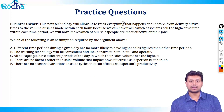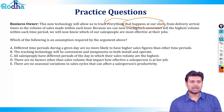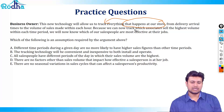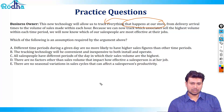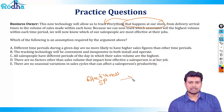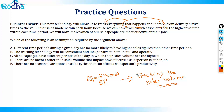Next question: a business owner says this new technology will allow us to track everything that happens at our store — from delivery arrival times to the volume of sales made within each hour. Because we can now track which associates sell the highest volume within each period, we will now know which of our sales people are most effective at their jobs. The technology tracks sales volume, and the author concludes this determines effectiveness of salespersons.